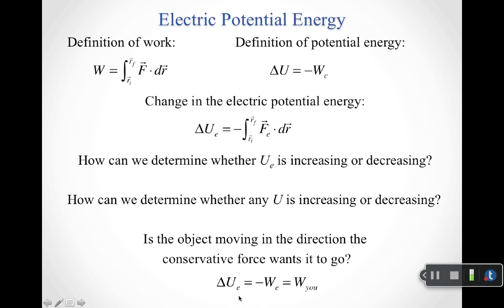The change in electric potential energy equals negative the work done by the electric force, or equivalently, it equals the work done by you. So if you increase the electric potential energy, it's because you did positive work to make the charges move opposite the direction the electric force wanted them to go. The electric force is doing negative work; negative times negative gives a positive change in PE equal to the positive work you do.